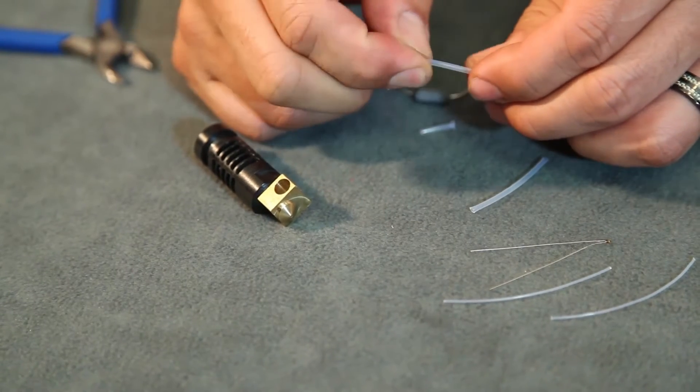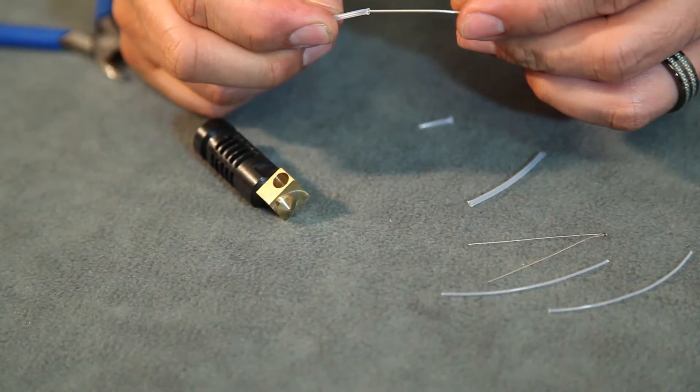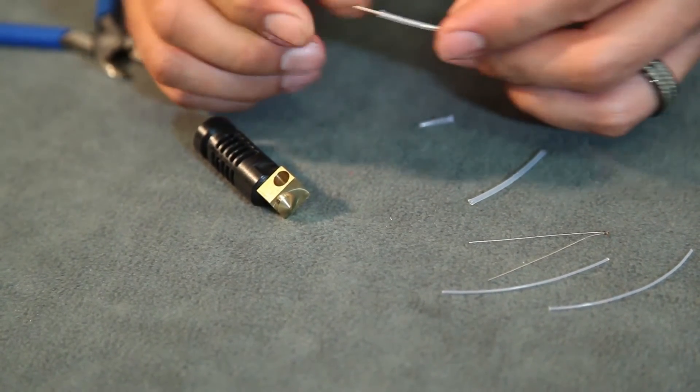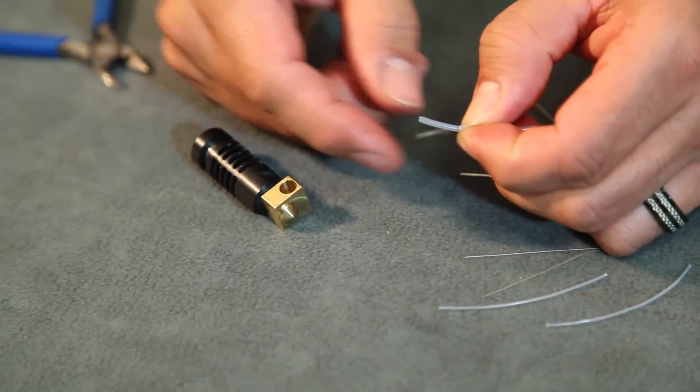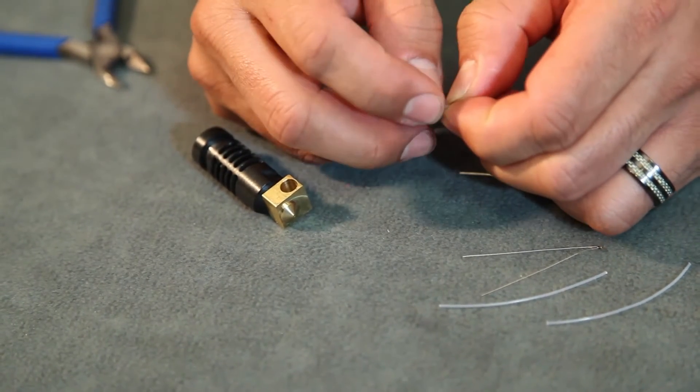And the reason we're cutting this is so you have room at the end where you're going to solder your wire. We're putting them side by side so you can get a measurement for your second cut.